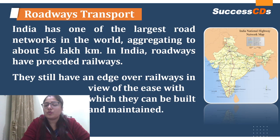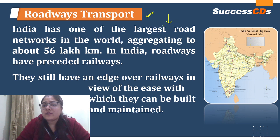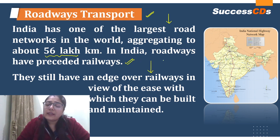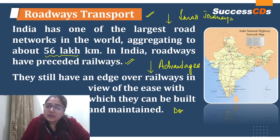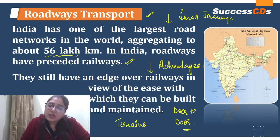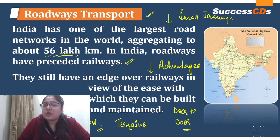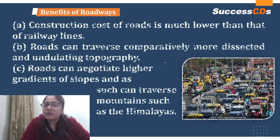Now we come to roadways transport. India has one of the largest road networks in the world — about 56 lakh km. Roadways came before railways in India and have certain advantages over railways. For small journeys they are efficient; they provide door-to-door service; they are accessible even in difficult terrains where trains cannot go; and they are cost effective. Because of these advantages, they are still preferred over railways.